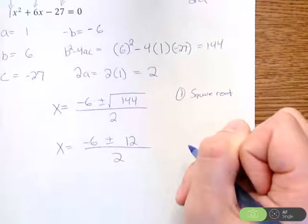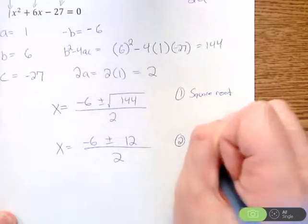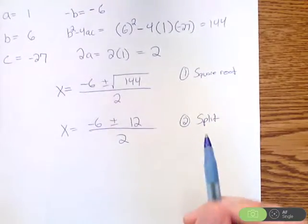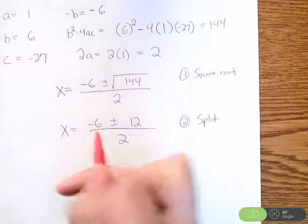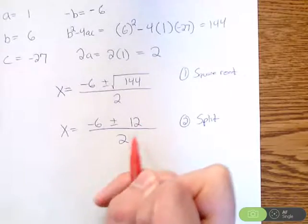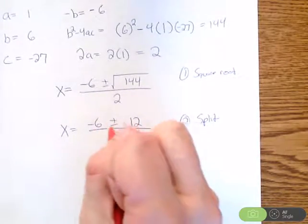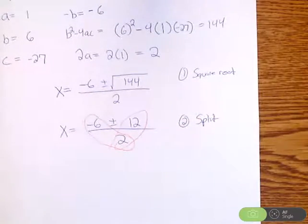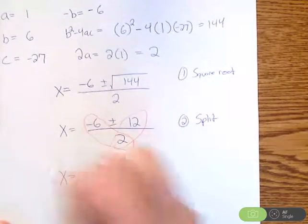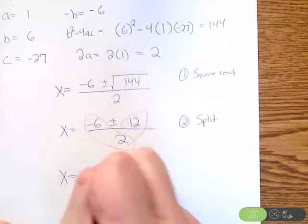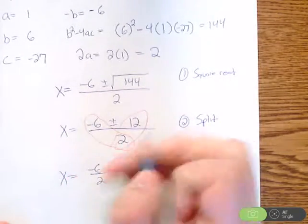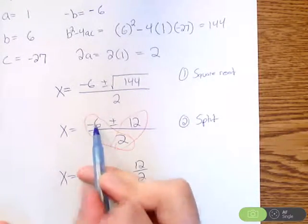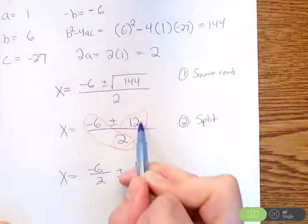The second thing I'm going to do is I like to split this up. And now this second steps here on out, you can go different routes, but I'm going to split it up. Meaning, I have negative 6 plus or minus 12 divided by 2. Both these numbers are divided by 2. Negative 6 is divided by 2, and 12 is divided by 2. So I'm going to split it up. So this is going to look like negative 6 divided by 2, plus or minus 12 divided by 2. So negative 6 divided by 2, 12 divided by 2.